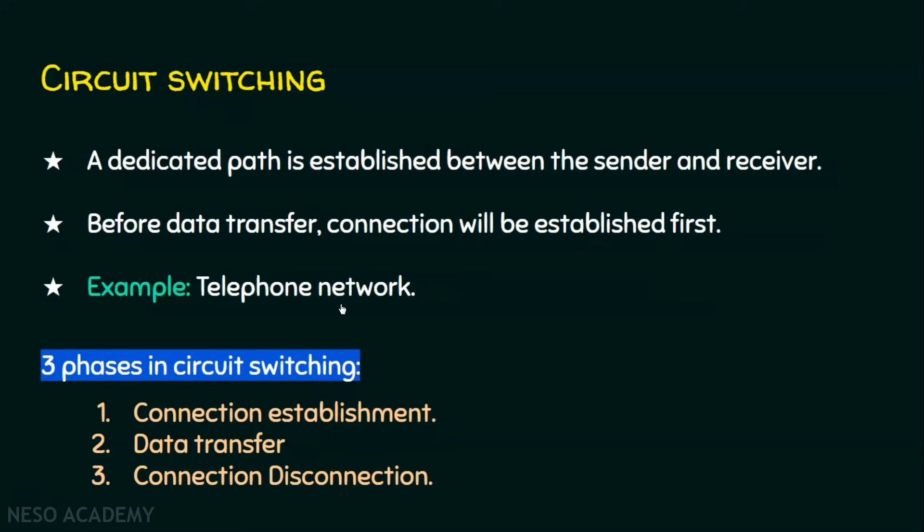In a telephone network, the sender first dials the number, and once the connection is established, they can talk to each other. Circuit switching has three phases: number one, connection establishment; number two, data transfer; and number three, connection disconnection.